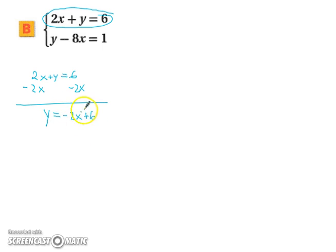And now we can substitute this quantity in for y because that quantity is equivalent to y. So we now have negative 2x plus 6 minus 8x equals 1. Similar to what we did in the last problem, combine some like terms.